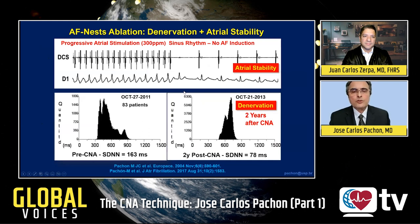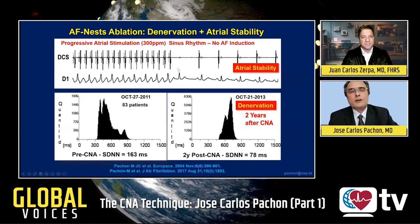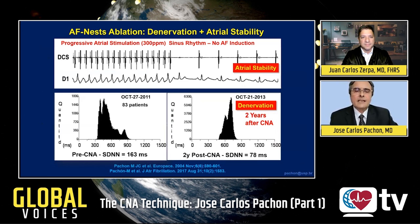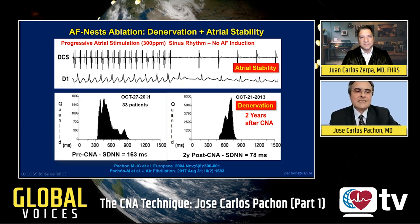Here are the results of ablation of the atrial fibrillation nest. There is important electrical stability of the atrial wall. In this case, we are stimulating the atrium up to 300 beats per minute, and there is no induced atrial fibrillation. This is an example of a patient who had atrial fibrillation, and after ablation of the AF nest, it is no longer possible to induce it. The second result is denervation.